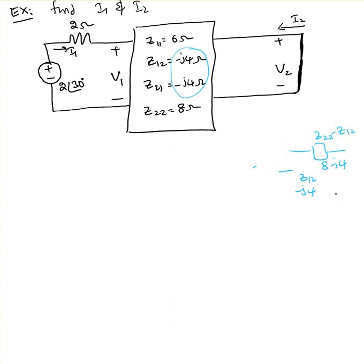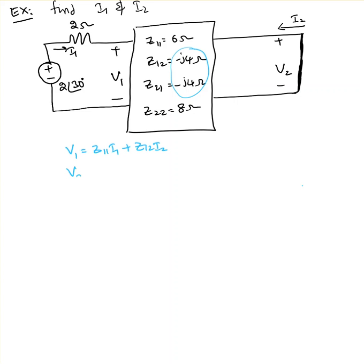Instead, I'm going to solve this using Z parameters directly. I know two equations: V1 equals Z11·I1 plus Z12·I2, and V2 equals Z21·I1 plus Z22·I2.